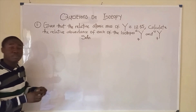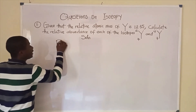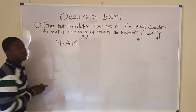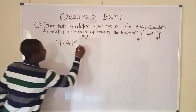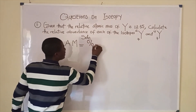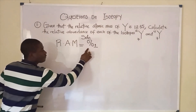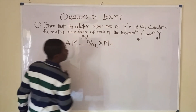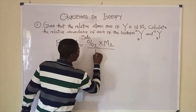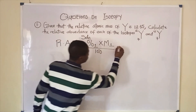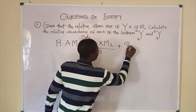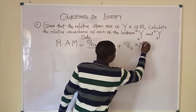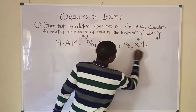In solving problems on isotopes, we have to take note that the relative atomic mass of any element is given by the percentage abundance of the first isotope times the mass number of the first isotope over 100, plus the percentage abundance of the second isotope times the mass number of the second isotope over 100.